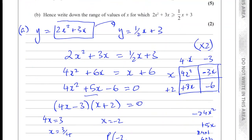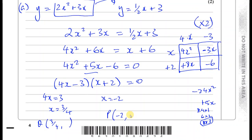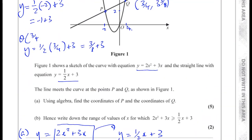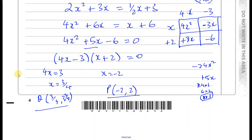So Q is going to be 3 quarters and 3 and 3 eighths. You can write that as 27 over 8 if you want. So you have the value of P is minus 2 and 2, and Q is 3 quarters and 3 and 3 eighths. And there we have the answer to part A. And I'll do part B on the next page.